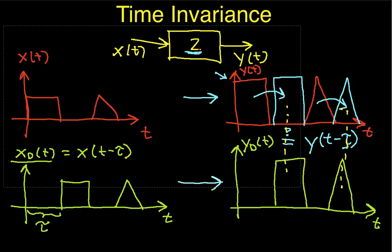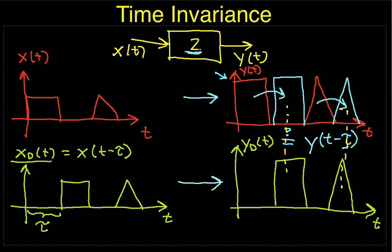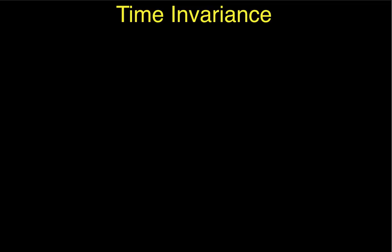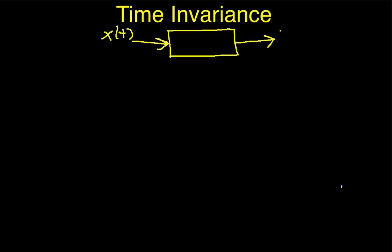Let's clear this off and look at another system to determine whether it is time-varying or time-invariant. Again, this system still has an input and an output, but now the system is going to be a gain that is the cosine of some ω₀t.